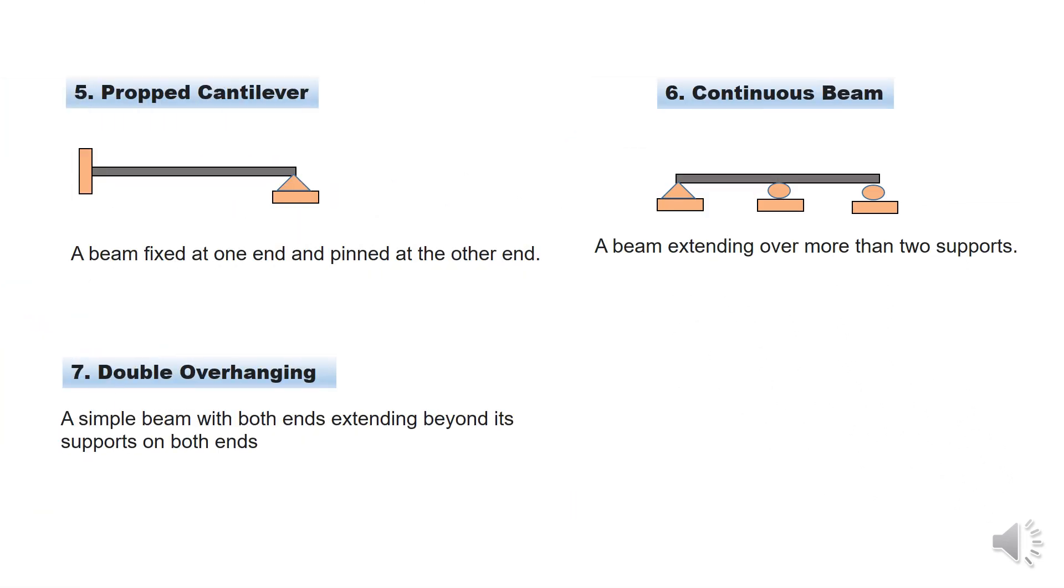The next one is propped cantilever. Propped cantilever beam. From this one, one end is fixed, the other end is pinned, that is it has pin support. A beam of this form is termed propped cantilever.